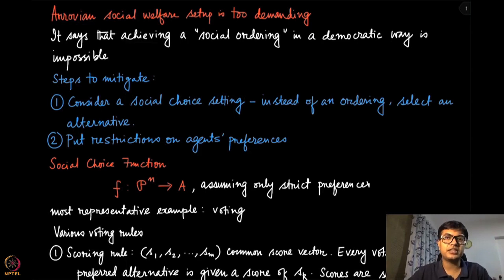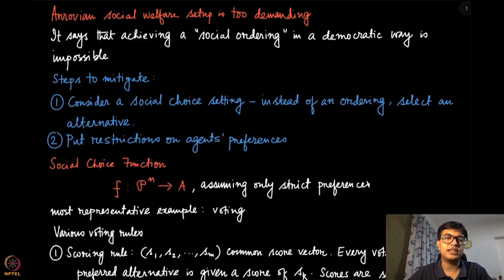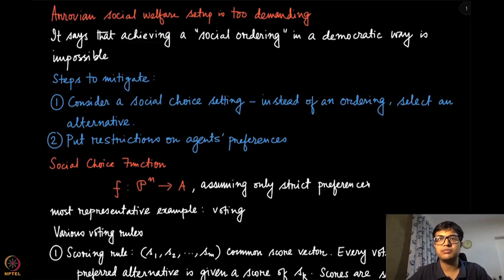In order to mitigate this impossibility, there have been various attempts, and we will discuss two such attempts in this module and the following modules. The first setup is what is known as a social choice setting. The second way of handling this is by placing certain restrictions on agent preferences, since in practice agent preferences may not take all possible orderings over all alternatives. If we can use those regularities appropriately, maybe we can get rid of this kind of impossibility result.